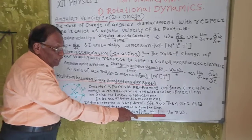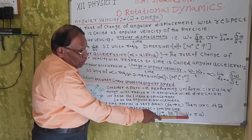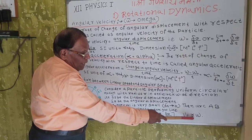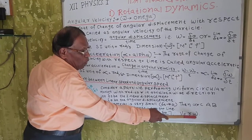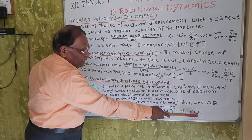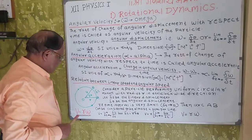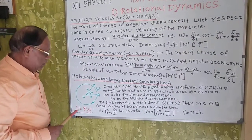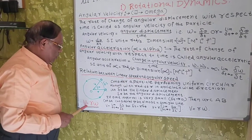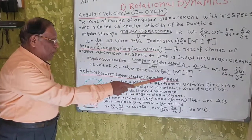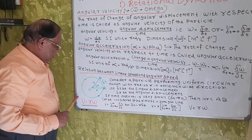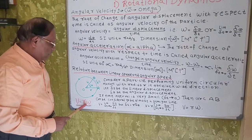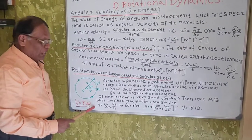Therefore, finally, we get velocity V equals radius R into angular velocity omega. In this way, we have derived the relation between linear speed and angular speed: linear velocity V equals radius R into angular velocity omega.